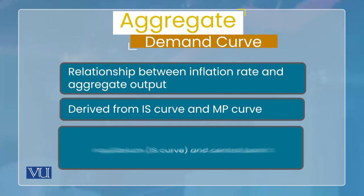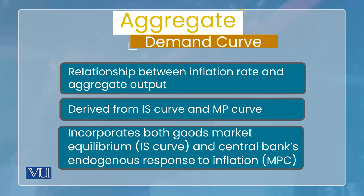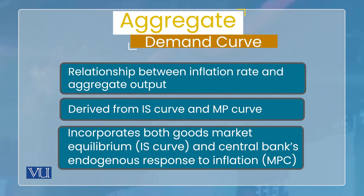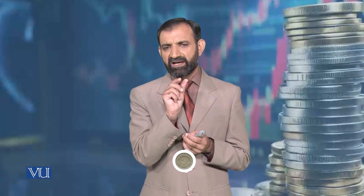The aggregate demand curve is a relationship between two variables. On the vertical axis we have the inflation rate, and on the horizontal axis, or x-axis, we have aggregate output. This means that the aggregate demand curve shows the relationship between inflation rate and aggregate output.